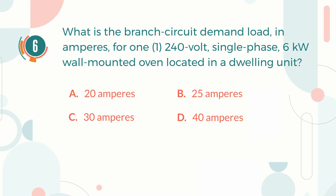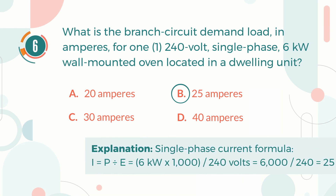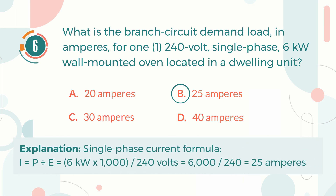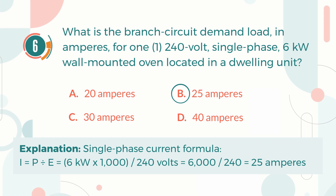The correct answer is B, 25 amperes. Explanation: The single-phase current formula is: current equals power divided by voltage. 6 kW means 6,000 watts divided by 240 volts. Then we get the current of 25 amperes.